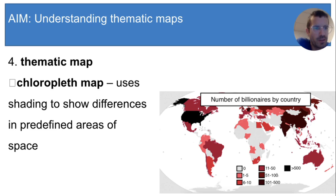You can also tell what the predefined area is because it's the smallest unit on the map with only one color. In this map, different countries are shaded different colors, with each color telling us how many billionaires live in that country.